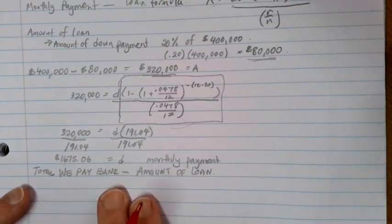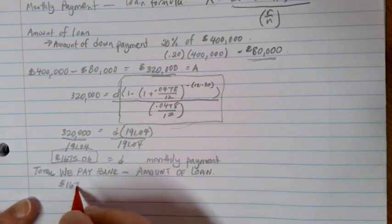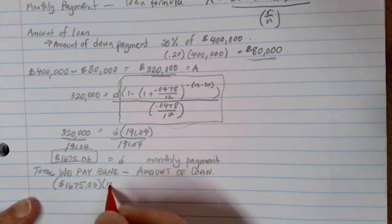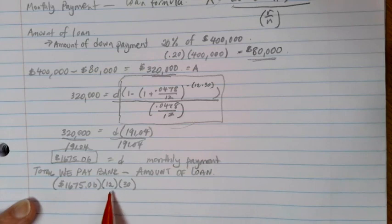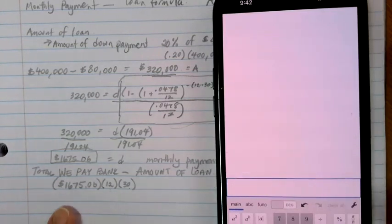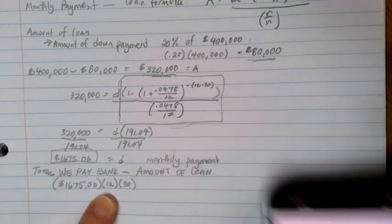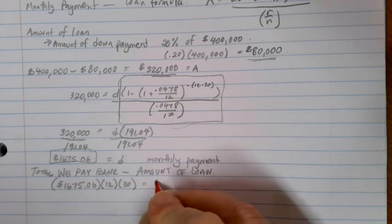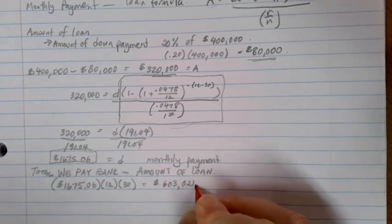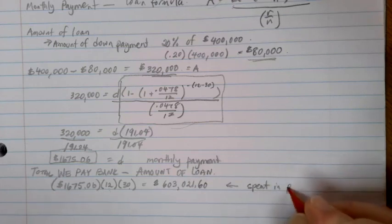Well, how do we figure out how much we paid the bank? I know my monthly payment, right? So I made monthly payments of $1,675.06 every month for 30 years. So if I take that payment times by 12, that'll give me how much I spent every year times by 30, and that will give me how much I spent over the entire life of the loan. So let's go ahead and multiply that out here and see what we get. We're going to have $1,675.06, and we're going to times that by 12 and times that by 30. And we end up with $603,021.60. So this is the total amount in payments that we spent over the life of that 30 years.